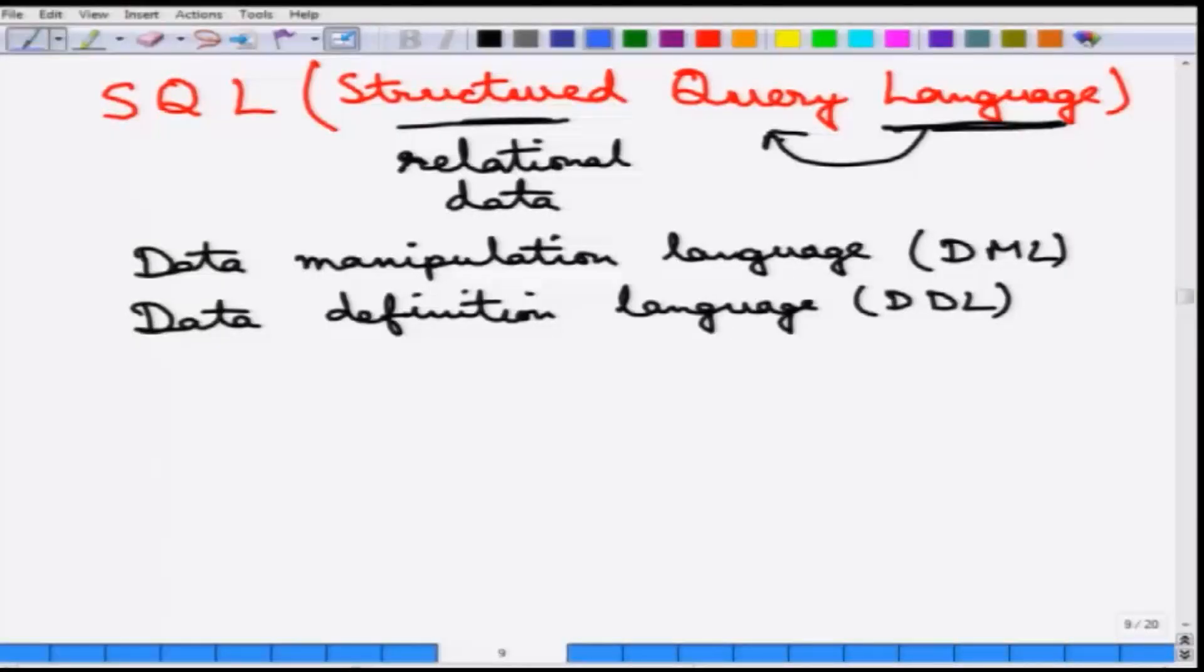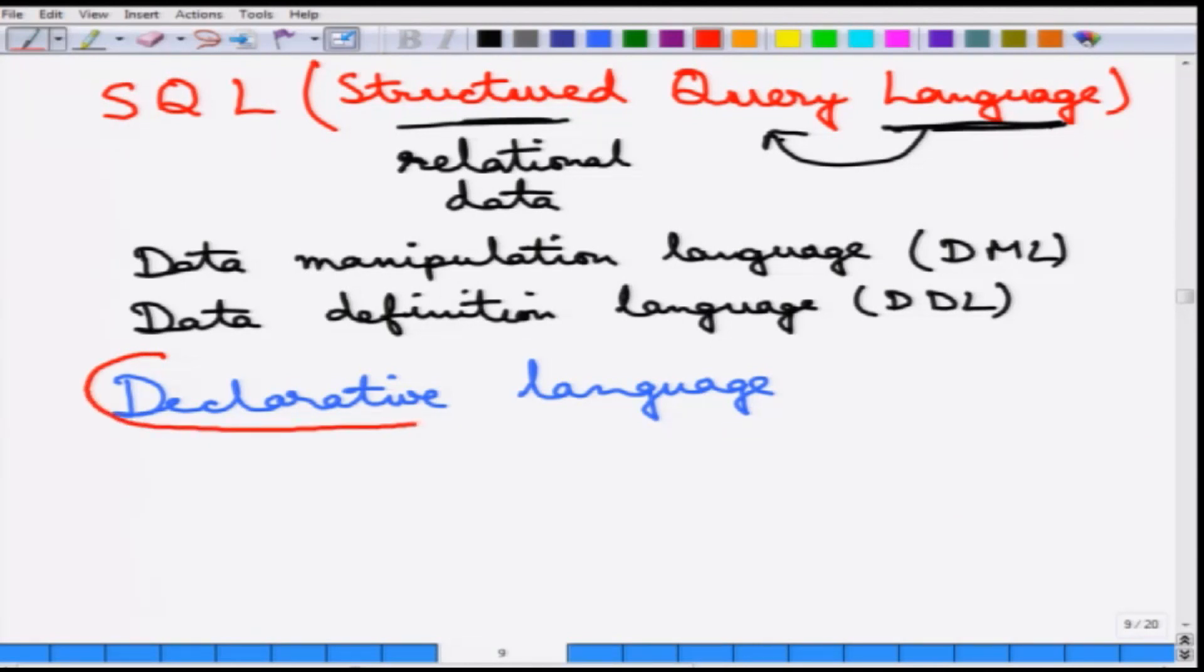One very important thing about SQL which is a big departure from languages such as C or Java is that this is a declarative language. What does a declarative language mean? A declarative language means this is not a procedural language.